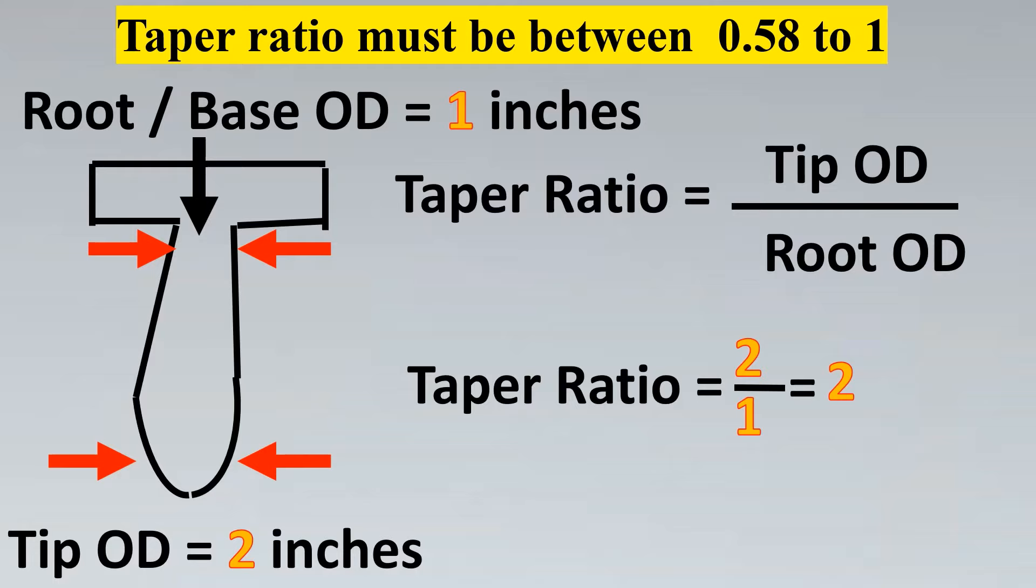So that would be called a straight thermowell. So anything which is tapered is okay and up till having the same length of the root as well as the tip is okay. Anything above that is absolutely not acceptable by this standard. So if you try to keep increasing the tip OD in order for the thermowell to pass the wake frequency calculations, your thermowell might pass if you're doing a manual calculation, but this would be the error which would pop up if you're doing it in SPI or some other software.